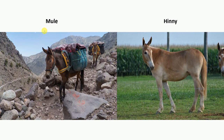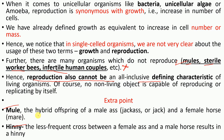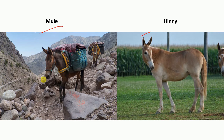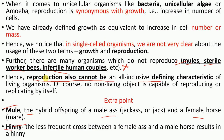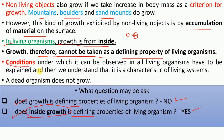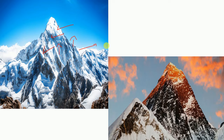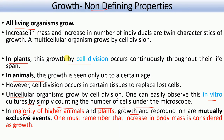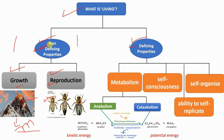Reproduction is a non-defining property of living organisms. You can see here the mule and the hinny — they are not able to reproduce. The mule is the hybrid offspring of a male donkey and a female horse, and the hinny is the opposite cross. So both growth and reproduction are non-defining properties or non-defining parameters. I hope this video has been helpful to you. If you like this video, please subscribe to my channel.